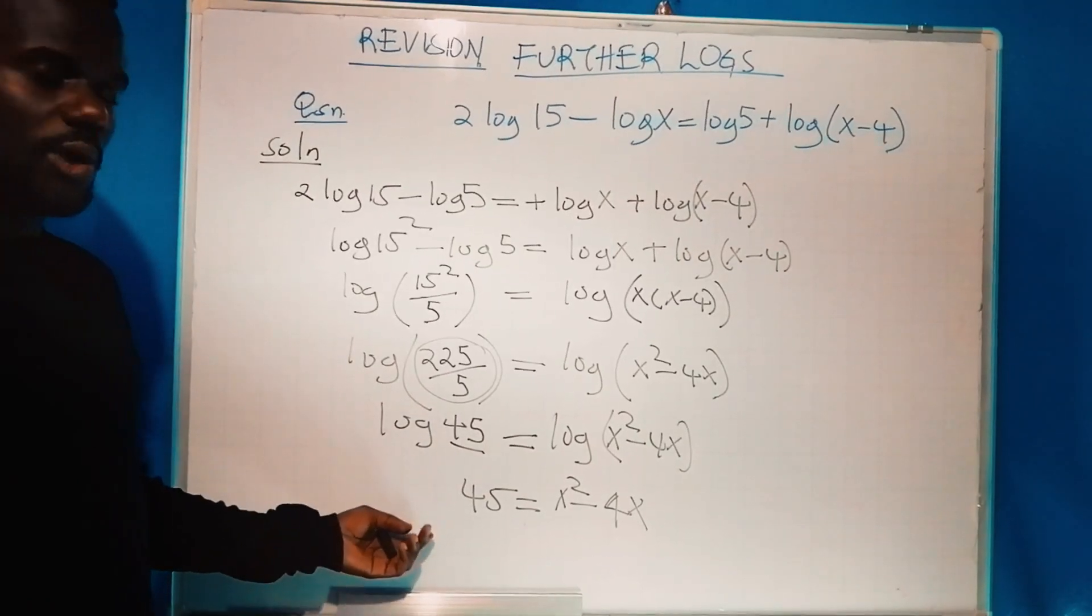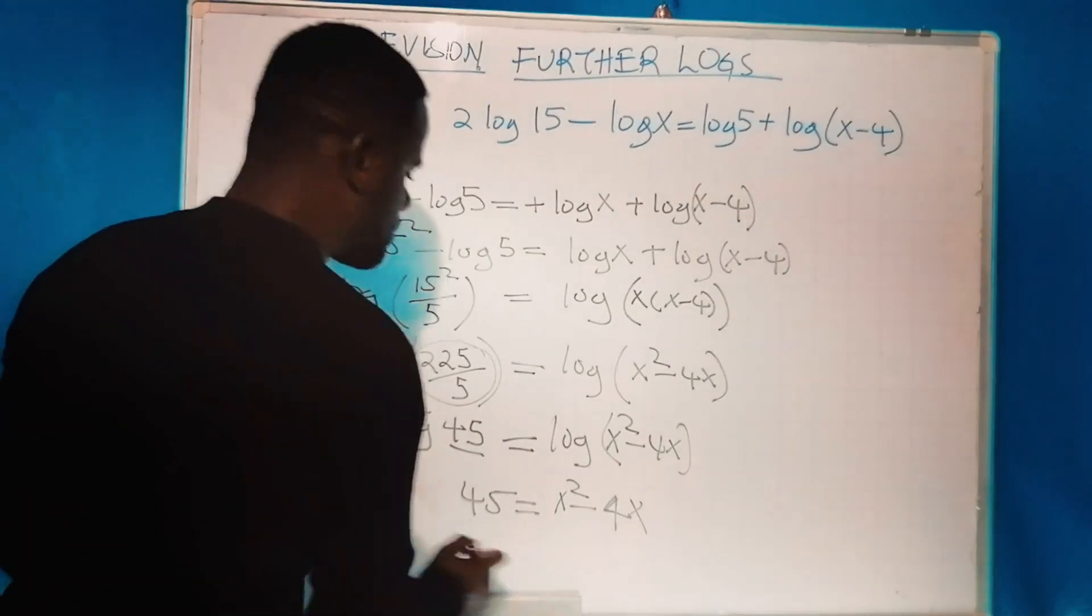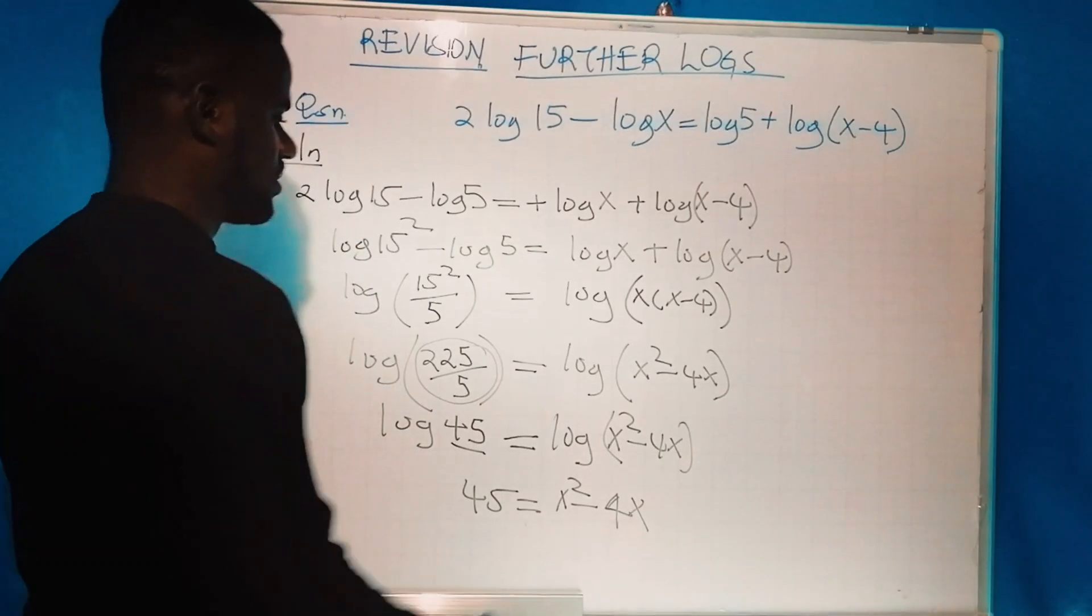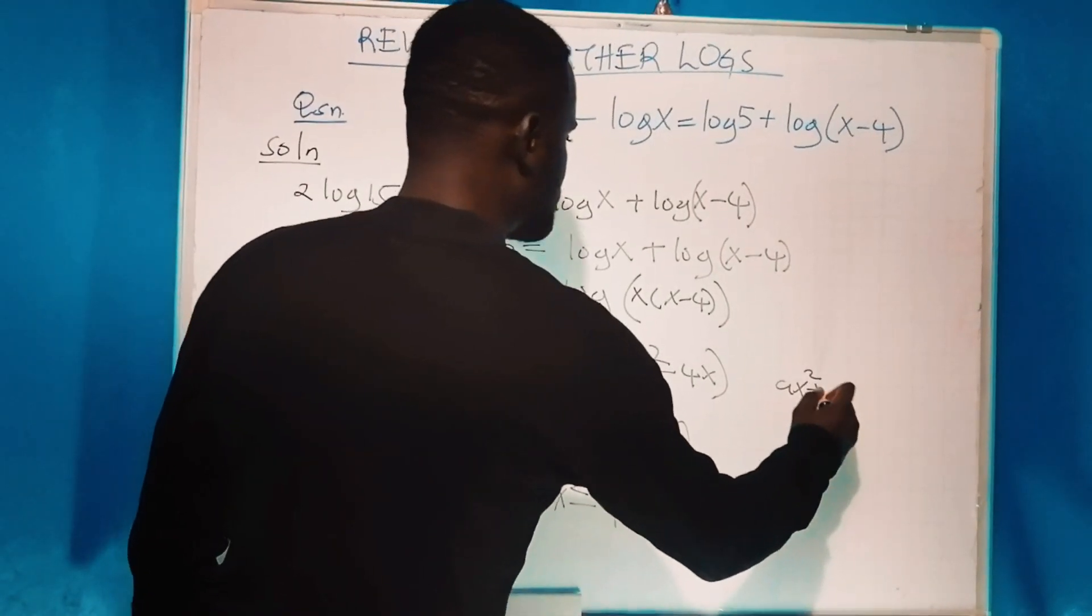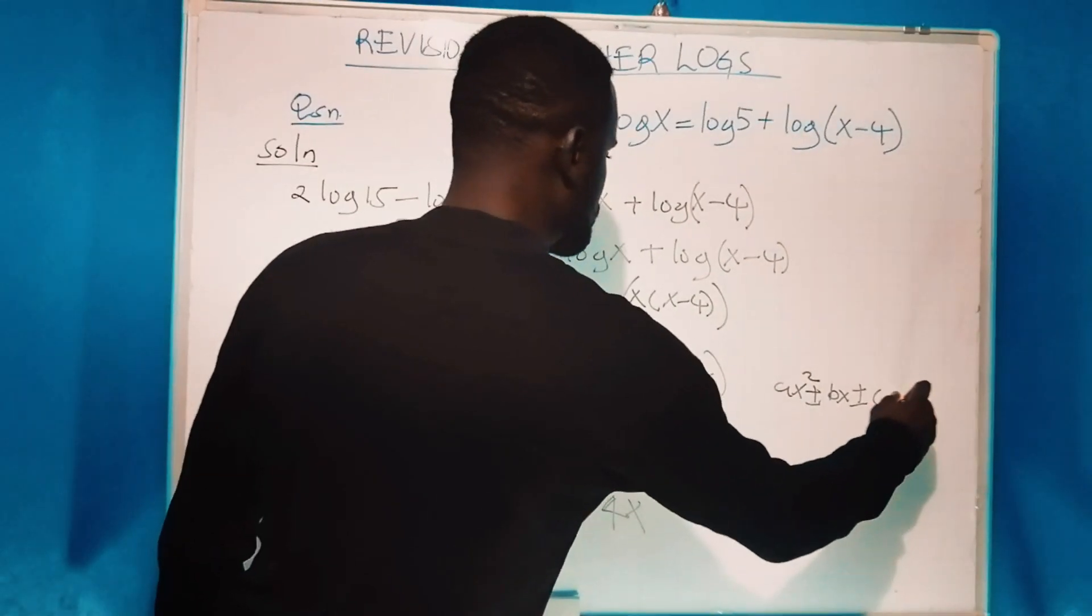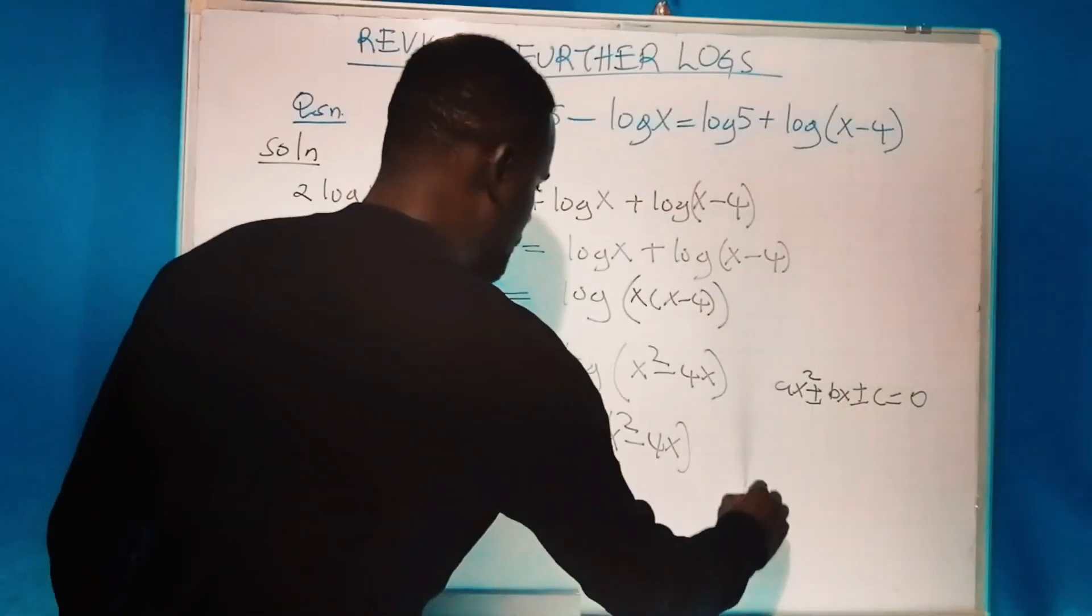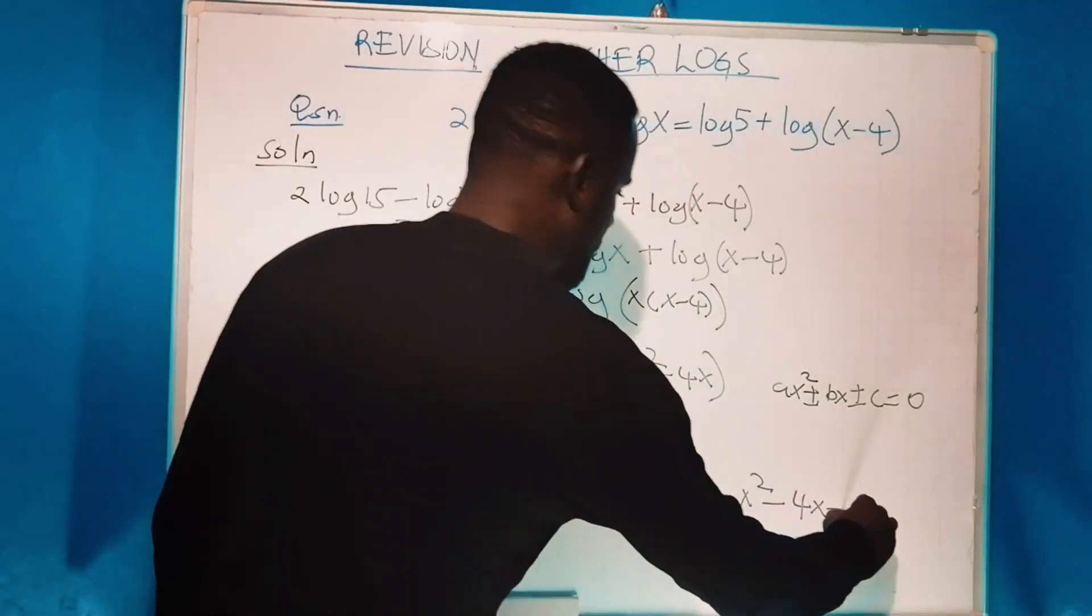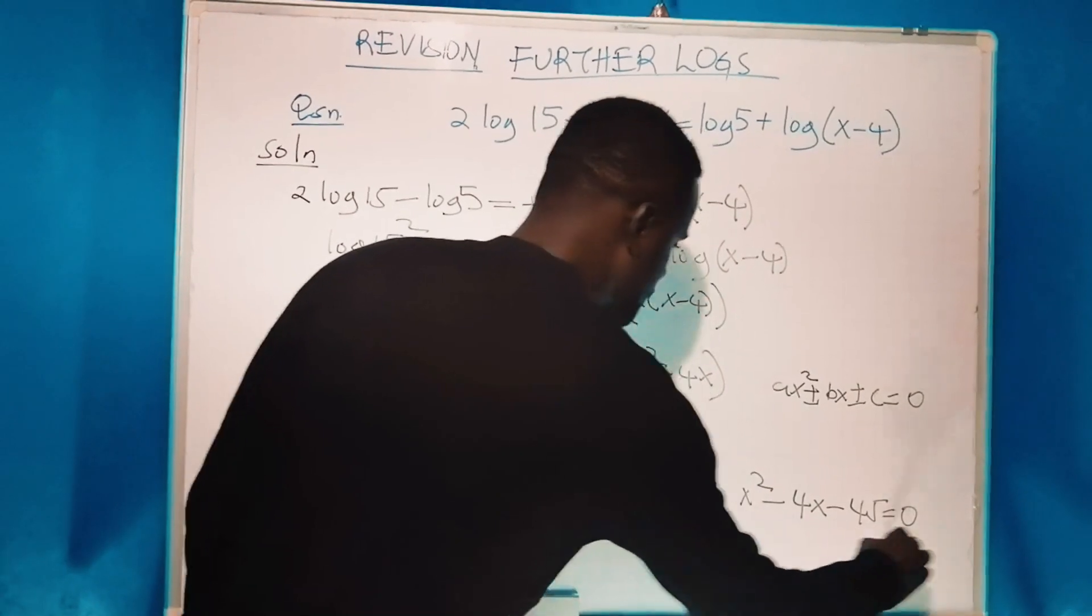That general format is ax² ± bx ± c = 0. Therefore, I'll have x² - 4x - 45 = 0.